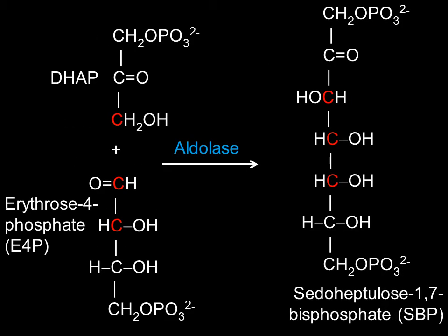Dihydroxyacetone phosphate will be coupled with erythrose-4-phosphate by aldolase to generate sedoheptulose-1,7-bisphosphate.